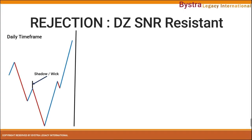Here we can see that this is the daily time frame. Up here is the resistance, and the bottom here is the support. So this will be the second movement — price on the daily breaks this second movement. This is considered as a danger zone SNR on the daily time frame as a resistance as well.